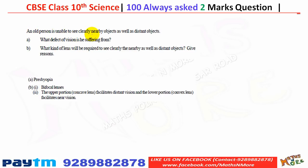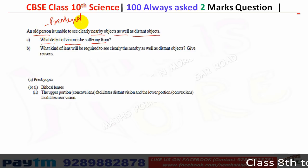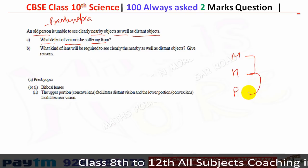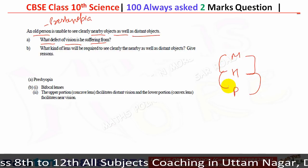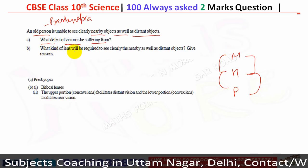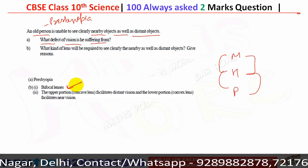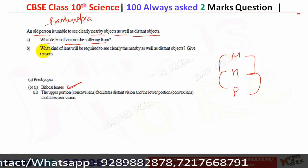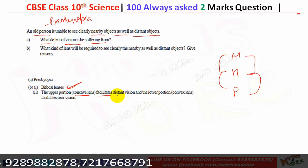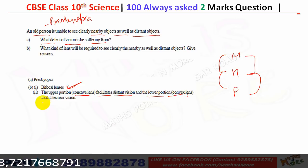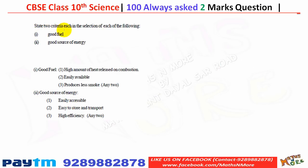An old person is unable to see clearly nearby objects as well as distant objects — this defect is presbyopia. Myopia, hypermetropia, and presbyopia are very important; definitely one question comes from these. A bifocal lens is required: it contains both concave and convex lenses. The upper concave portion facilitates distant vision and the lower convex portion facilitates near vision.